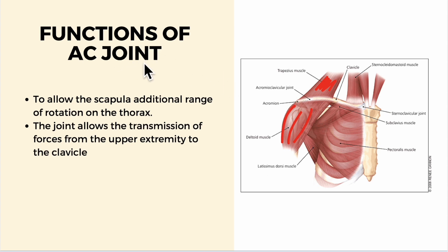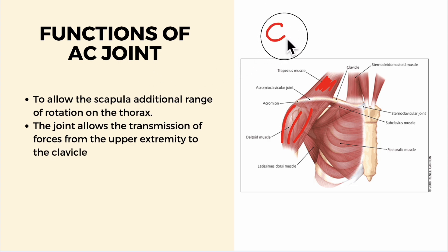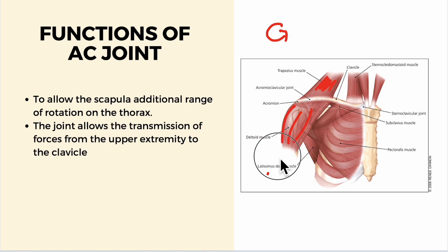Moving to the functions of the acromioclavicular joint: it allows the scapula additional range of rotation through the thorax. The joint also allows the transmission of forces from the upper extremity to the clavicle bone.